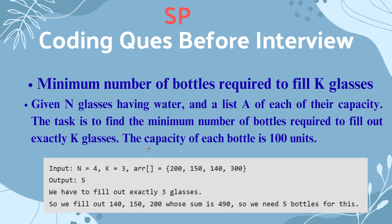We have to fill exactly three glasses. We will fill glasses with capacities 140, 140, 150, and 200, whose sum is 490 — so we need 5 bottles. The task is to find the minimum number of bottles required to fill exactly K glasses.